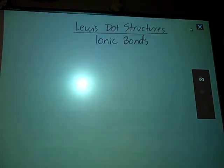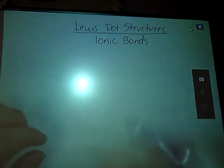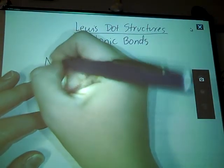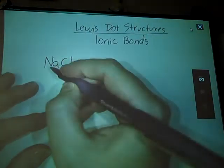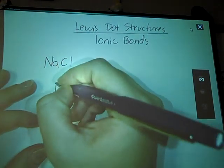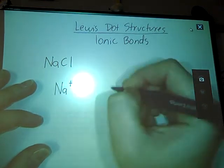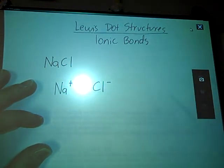So before I can do anything else, I'm going to have to draw the Lewis dot structures for my two ions involved. Let's start off with something relatively simple like sodium chloride. So I need to come up with my Lewis dot structures for my sodium ion and my chloride ion.